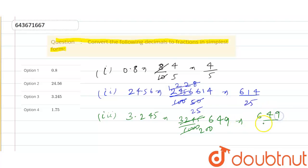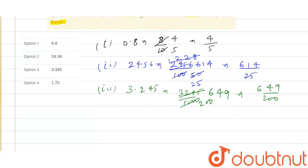The last option, the fourth option, is 1.75. We can write it as 175 by 100. If we divide by 5, we get 35 divided by 20. Then again by 5, we get 7 by 4. So the required fractions are 4 by 5, 614 by 25, 649 by 200, and 7 by 4.